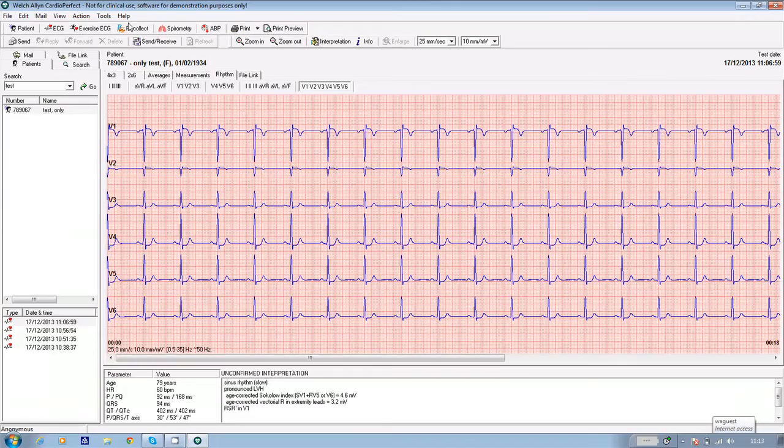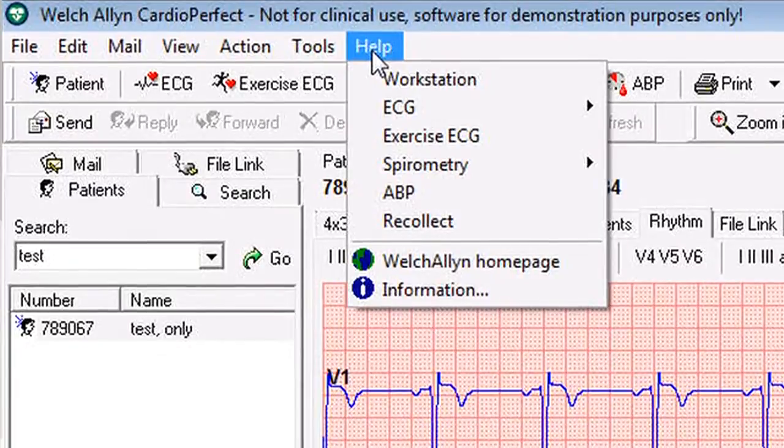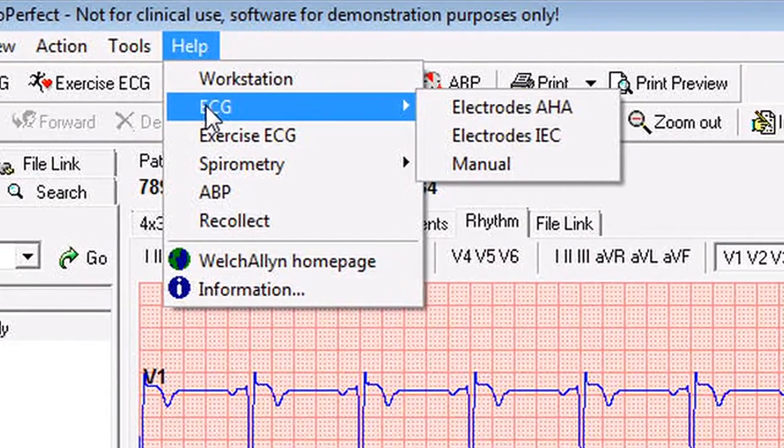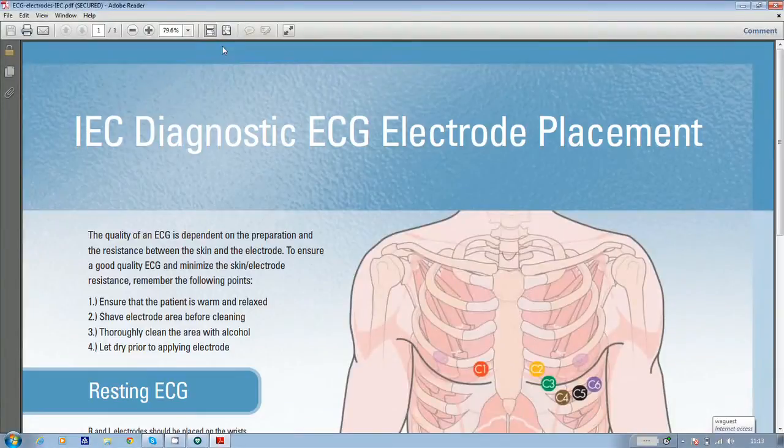If you need help with patient preparation or correct lead placement, there's a useful graphic in the Welsh Allen software. Go into the software, click on the help icon at the top of the screen and from the drop down menu, select ECG followed by electrodes IEC and the graphic will appear on screen.